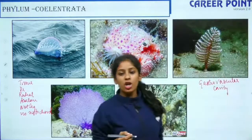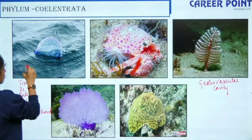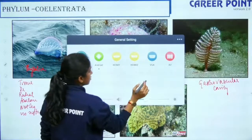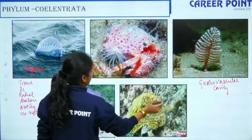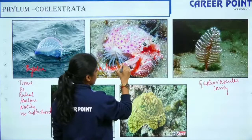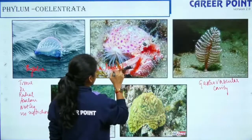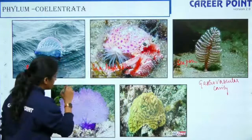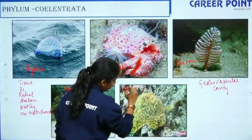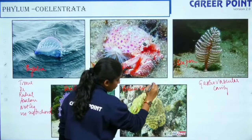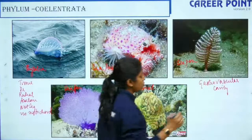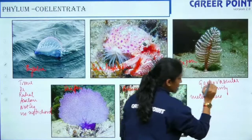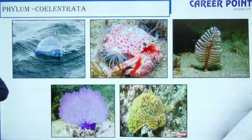Examples of Coelenterata include Physalia (the Portuguese man-of-war), sea anemone, sea pen, sea fan (Gorgonia), and brain coral. One more important term here is metagenesis — when they alternate between the two stages, polyp and medusa.